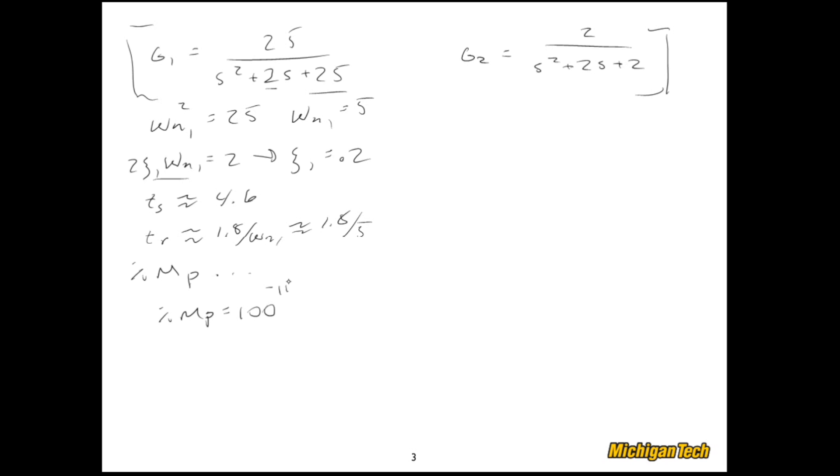And the percent mp, well we'd have to run through this formula that we had, which was percent mp equals 100 e to the negative pi zeta over square root of 1 minus zeta squared. And we'll come back to that later at the very end of the video because we could run through that and calculate what the percent overshoot is, but there's some other ways to do that that we'll explore.